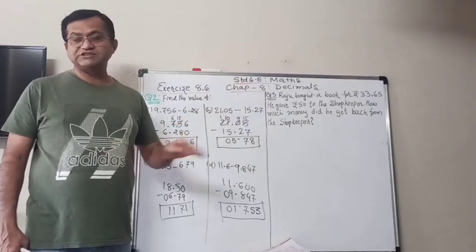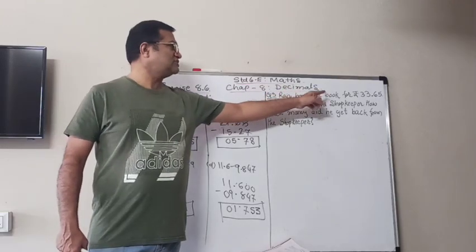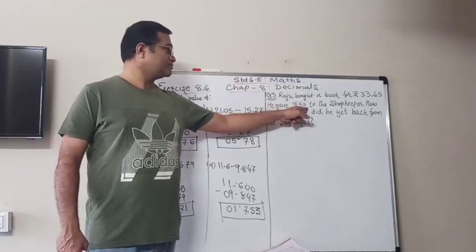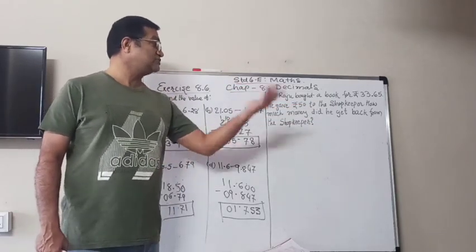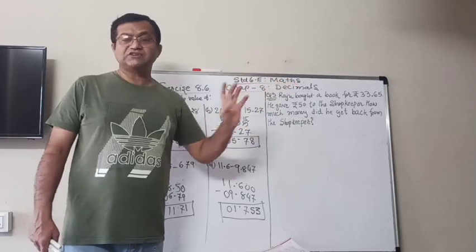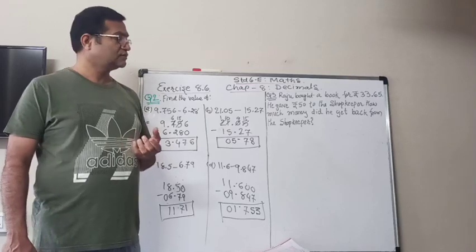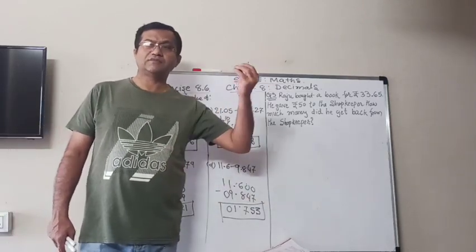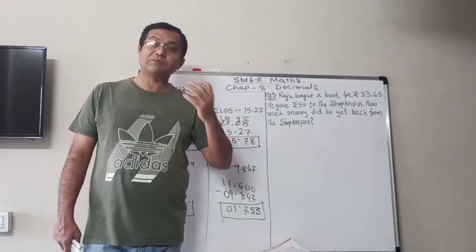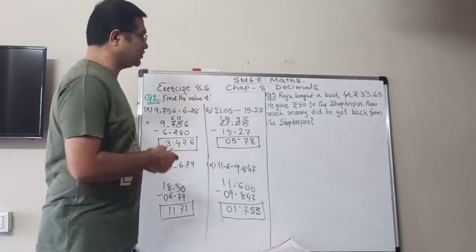Now question number 3. It's a word problem. Raju bought a book for Rs. 35.65. He gave Rs. 50 to the shopkeeper. How much money did he get back from the shopkeeper? So this is also very important, because when you also go and buy something and you give the 100 rupees note or 200 rupees note, then you should know how much you should get back. So subtraction here with the decimal is very, very important.